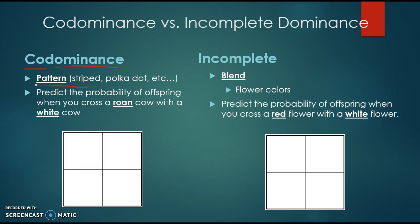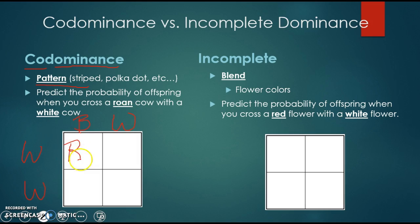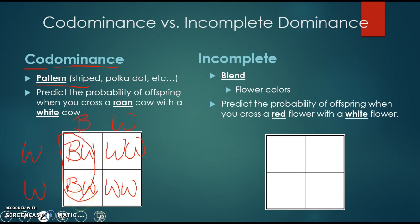In the example here, you're asked to predict the probability of offspring crossed between a roan cow and a white cow. A white cow's genotype would be capital W, capital W, because it's the only color that cow will express. Roan means a spotted cow—brown and white or red and white. After completing the Punnett square, you will have 50% of their offspring being roan, genotype BW, and 50% being white, genotype WW.